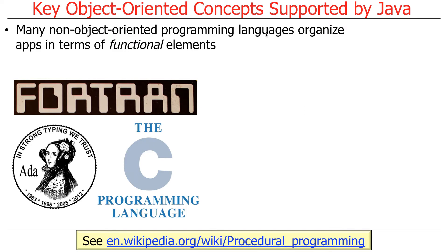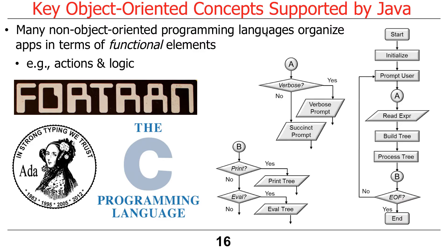There's a whole pile of non-object-oriented programming languages which have largely gone away — examples being Fortran, C, Ada, and so on. The way they specify their structure is through functional elements, like actions and logic. Back when I was first learning programming, we had to draw these ridiculous dataflow diagrams to show what our program did before writing the code, which I always thought was horrible — it took way longer to write the diagram than to write the code. But the idea was to get people to think more systematically. That's functional-oriented: conditional branching, straight-line code, iteration, and you could visualize it.